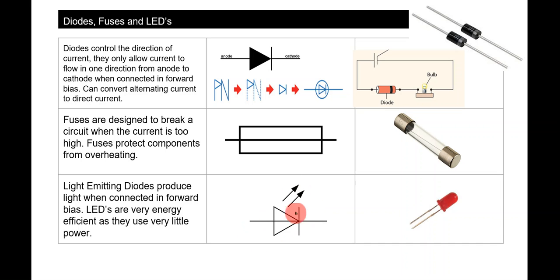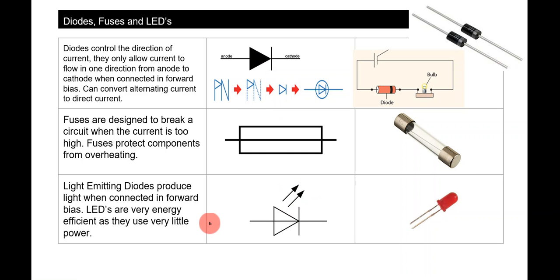An LED, or light emitting diode, produces light when connected in forward bias. LEDs are very energy efficient — they use very little power, don't get as hot as bulbs, and take less electricity to light up. The symbol is similar to a diode but with two arrows indicating light coming out.